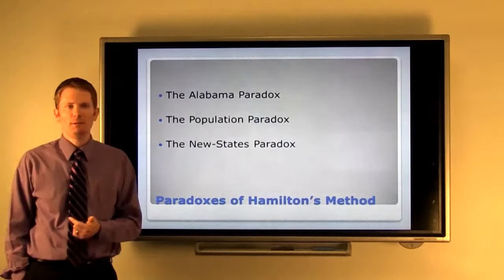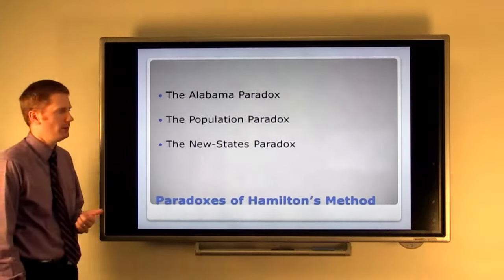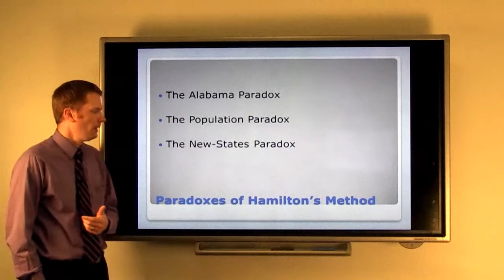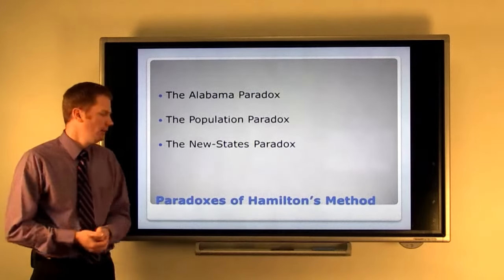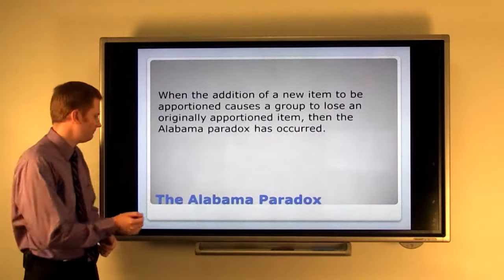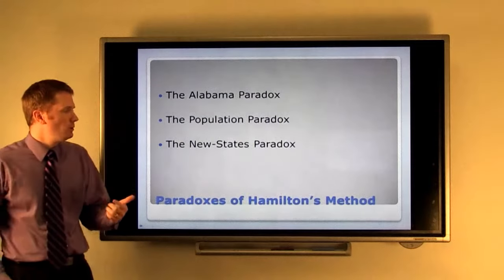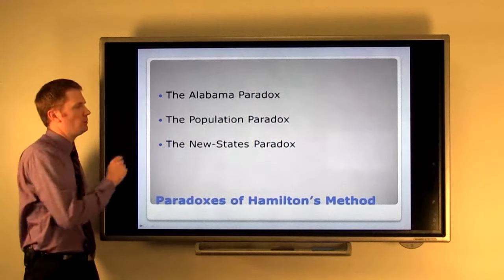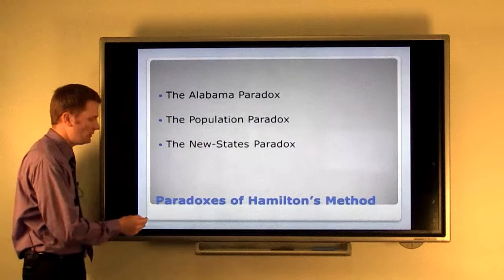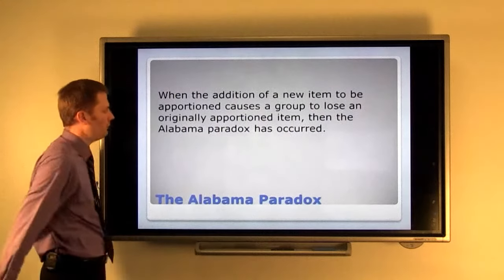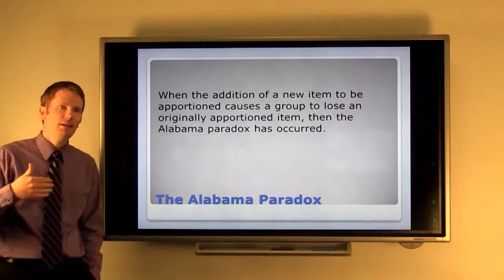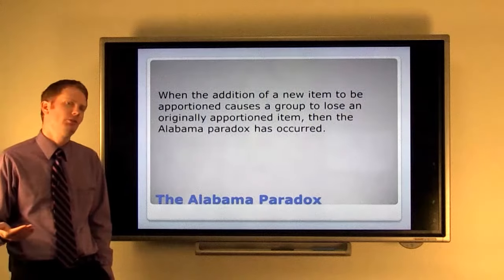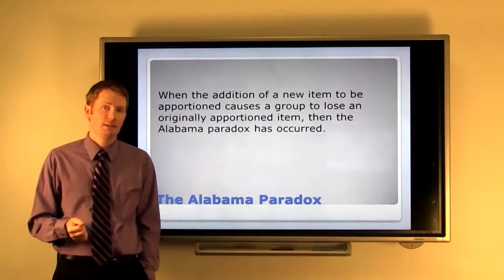The Alabama paradox, the population paradox, and the new states paradox were actually discovered when we were using Hamilton's method. As we were apportioning representatives to the U.S. House of Representatives, throughout history, we ran into these three paradoxes. And I'm going to tell you what these three are, and then you can decide for yourself whether you think they're important. First is the Alabama paradox. It says that when you add a new item to be apportioned, that causes a group to lose an originally apportioned item. If that happens, then the Alabama paradox has occurred.